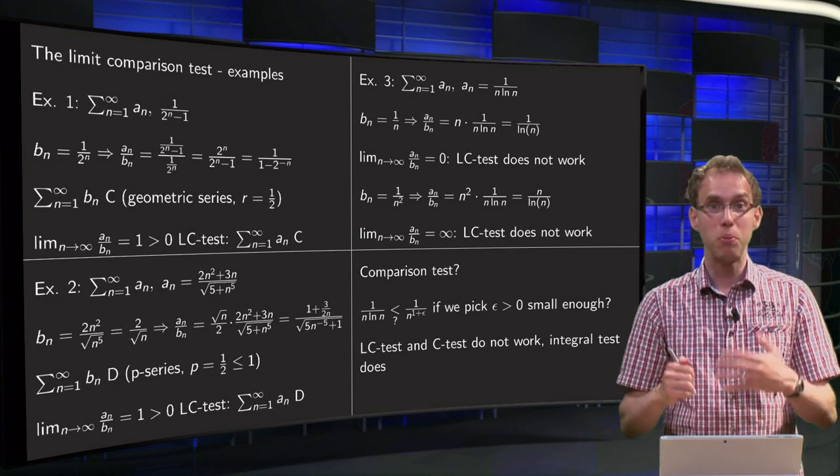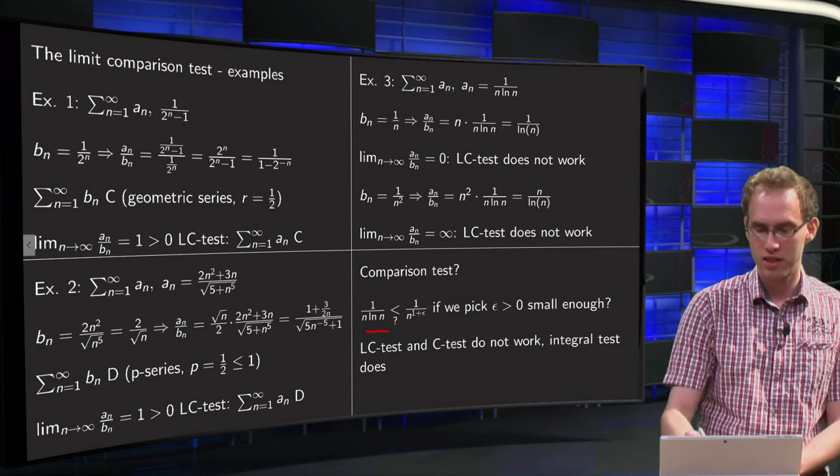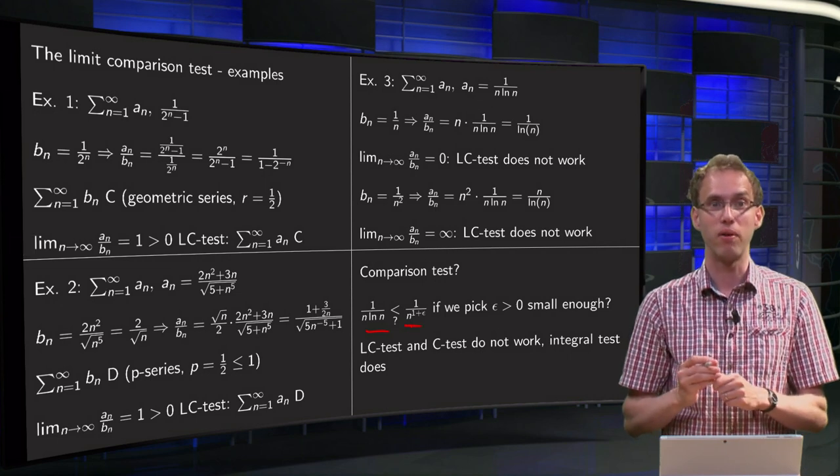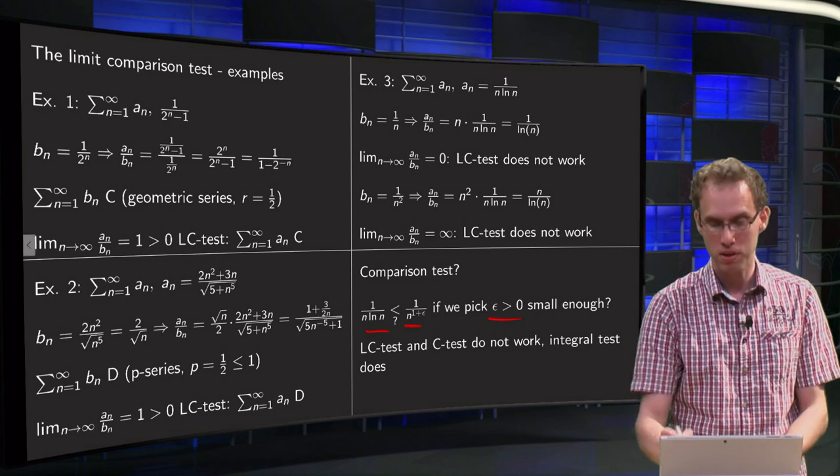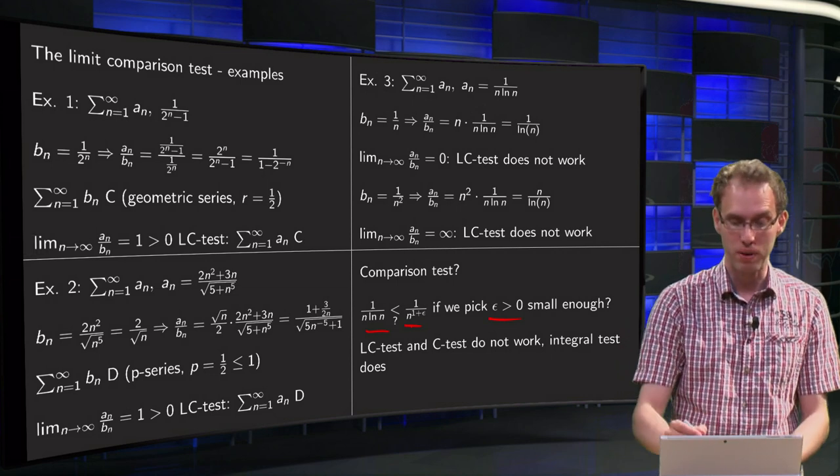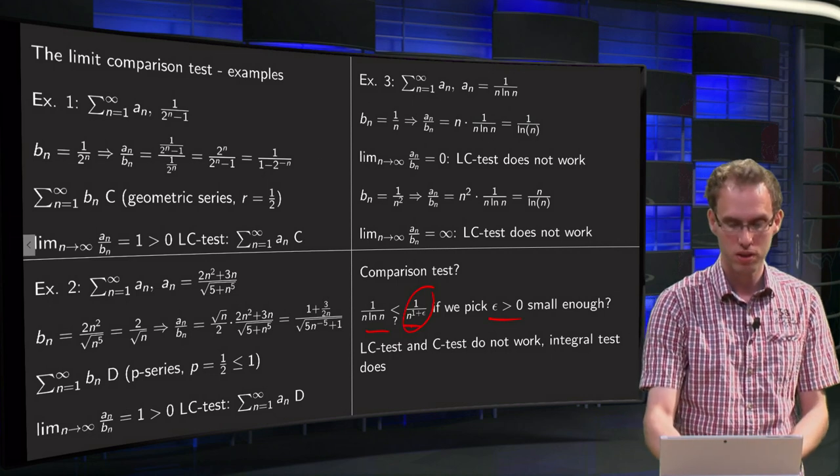So can we try some comparison test, like is 1 over n ln n smaller than 1 over n times 1 over n to the power epsilon, provided we pick epsilon bigger than 0 small enough? Because then we would be happy, because the series of this one converges.